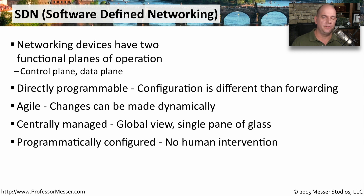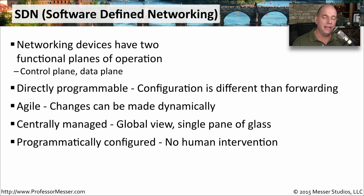Another important characteristic of software-defined networking is that it can be completely automated. Having a network that is agile and can change at a moment's notice means you don't necessarily need to be there as a human. If a new database server is deployed, it makes sense to connect it to the segment associated with database components, with standard firewall configurations. When the database server is deployed, automatically behind the scenes your software-defined network can deploy the correct switch configurations, add it to the correct VLAN, deploy a virtual firewall right next to it, and have everything running without any human intervention.